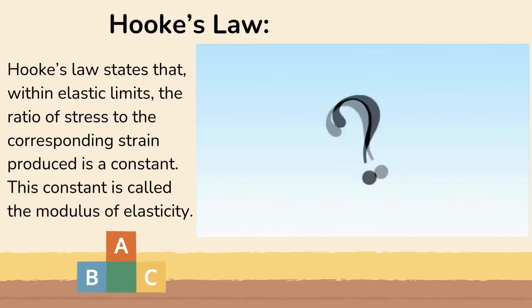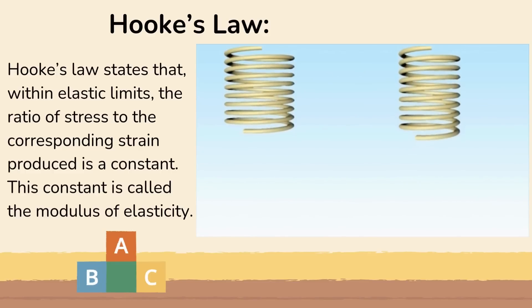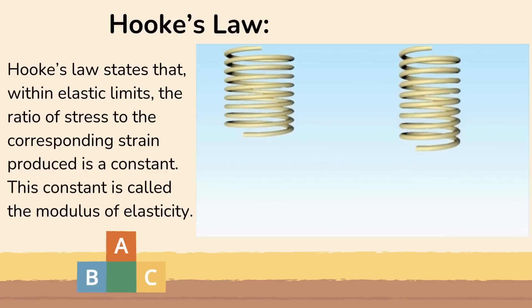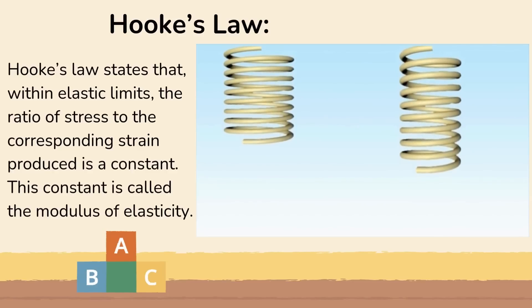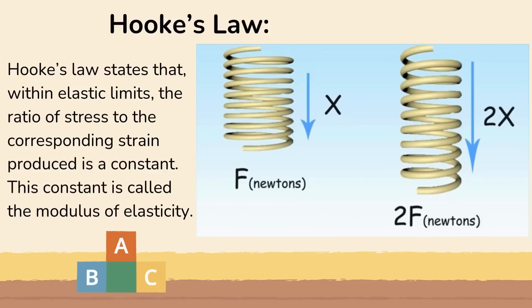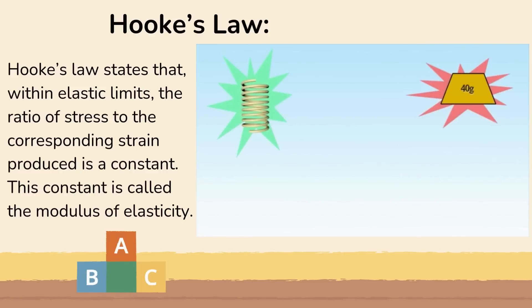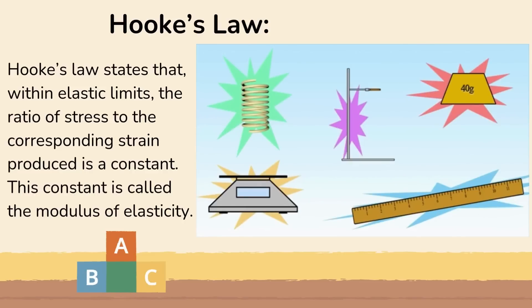We will now set out to prove Hooke's law by experimentation on the spring and its length when different forces are applied to it. We expect our result to show that the stretch on the spring is directly proportional to the force applied, so if the stretch is x and the force is f, then 2x should equal 2f. Apparatus that you will need includes a spring, weights, scales, a ruler, a retort stand, and clamps.